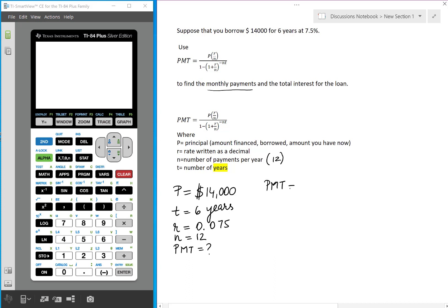So PMT, the payment is 14,000 times R, 0.075 over 12, everything over 1 minus quantity 1 plus 0.075 over 12, to negative N is 12 times T, the number of years is 6. So now we are going to calculate this using the calculator to my left.